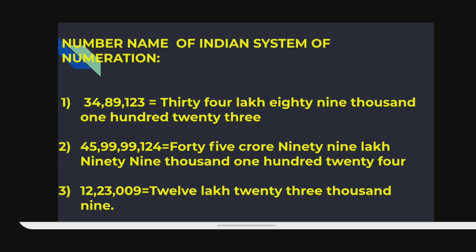Number names in the Indian system of numeration. The first number is 34,89,123. The first two digits (3 and 4) are in the lakhs period; the next two (8 and 9) are in the thousands period; remaining (1, 2, 3) are in the ones period. So: 3×10 lakh = 30 lakh, 4×1 lakh = 4 lakh; together 34 lakh. 8×10,000 = 80,000, 9×1000 = 9,000; together 89,000. Then 1×100 = 100, 2×10 = 20, 3×1 = 3. The number is read as 34 lakh 89,123.